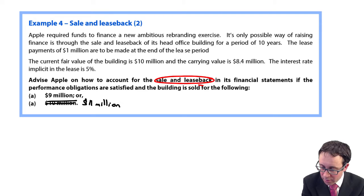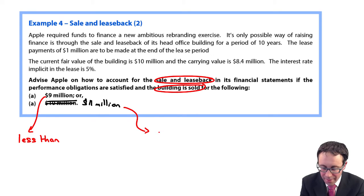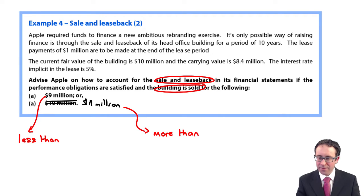Here, the building is sold for 9 million, which is less than the market rate or the market value. And the 11 million is more than the market value. After that, everything is exactly the same. We've still got the same company, still funding it by a 10-year lease. The payments are 1 million. The fair value of the building is 10, the carrying value is 8.4, and the interest is 5%. Everything is exactly the same.